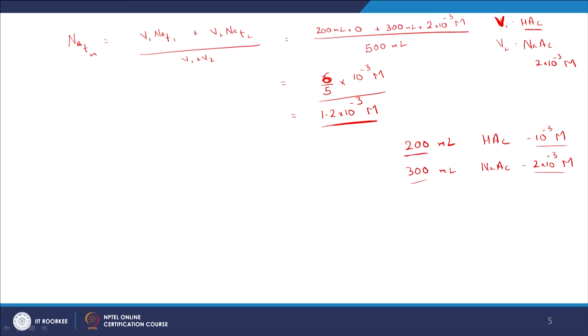If you are using the same conjugate acid-base pair and the concentrations are similar and equal, then pH equals pKa. The concentrations here are not way too different from each other, so we can ballpark it around 4.7 (the pKa). But we need to determine whether the pH will be less than or greater than 4.7 by looking at the relevant quantities of acid versus conjugate base.